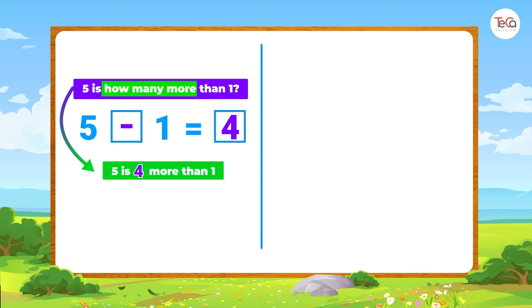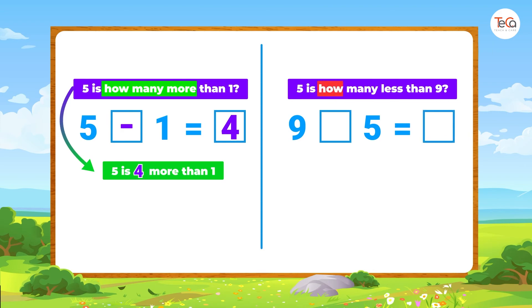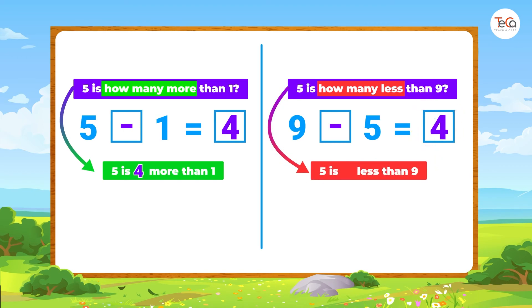Next: five is how many less than nine? We subtract five from nine to get four. So five is four less than nine.